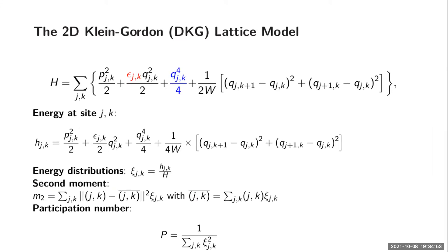For a particular site in the lattice, we have energy H_{jk}, given by this formula. From this energy, we can define a distribution, and for the properties of the distribution, we can think of the second moment M2, which you can think of as the standard deviation — it measures the extent of the distribution. We also have the participation number, which tells us the number of highly excited sites. If only one site has all the energy, then P will be one. If all sites have the same energy, then P will be equal to the size of the lattice.